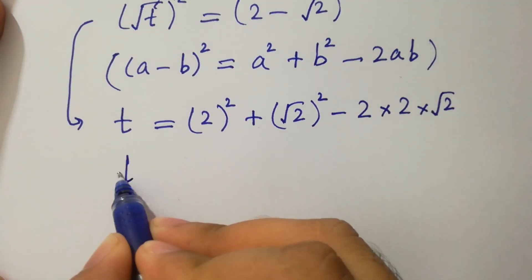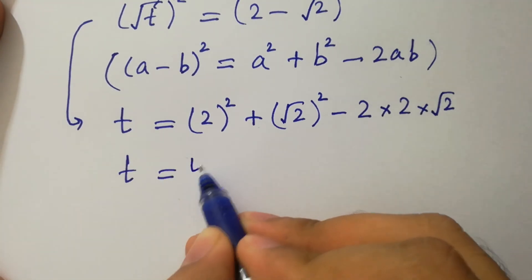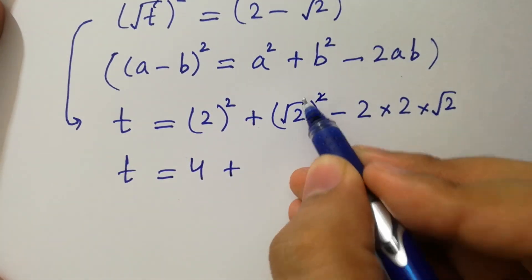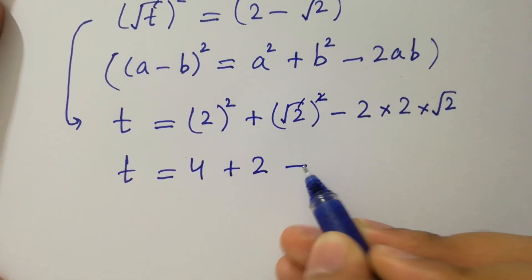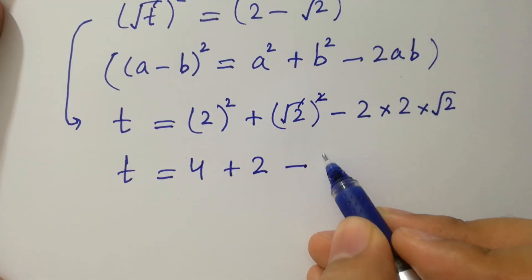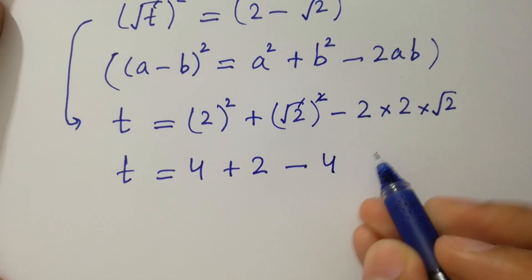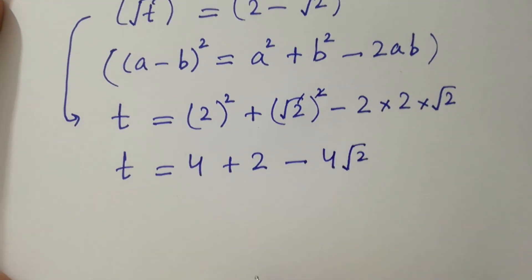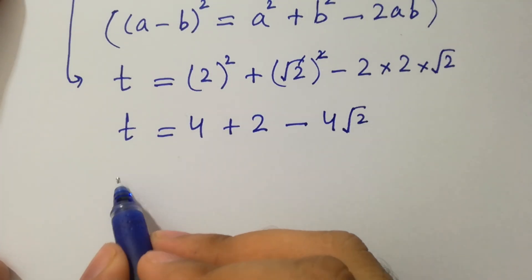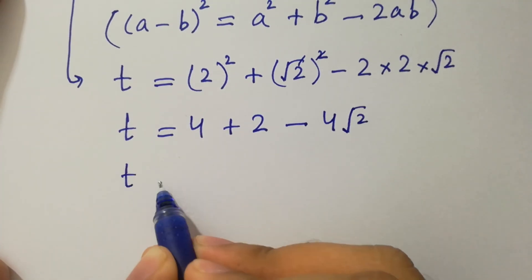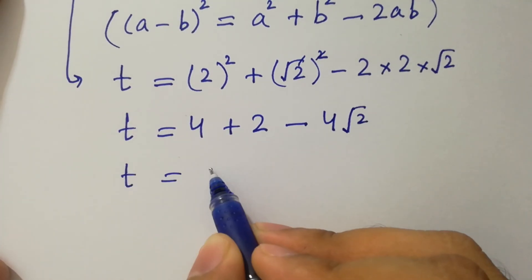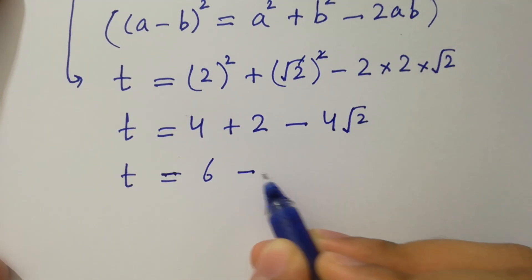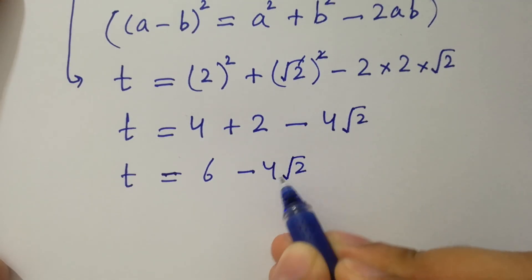We have t equal to: 2 times 2 is 4, plus the square cancels from square root of 2, minus 2 times 2 is 4 times square root of 2. So t equals 4 plus 2, which is 6, minus 4 square root of 2.